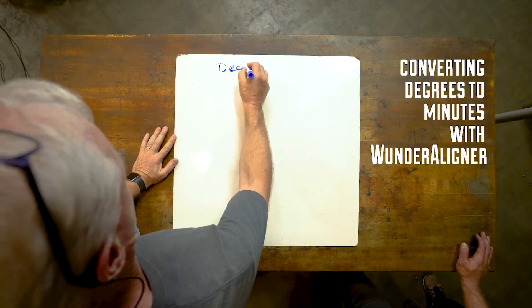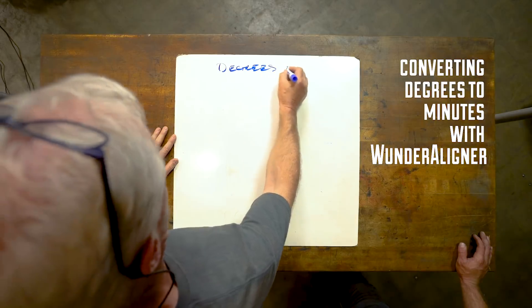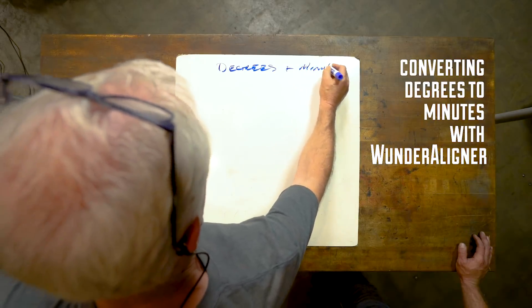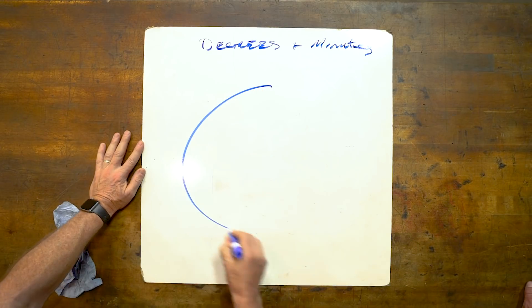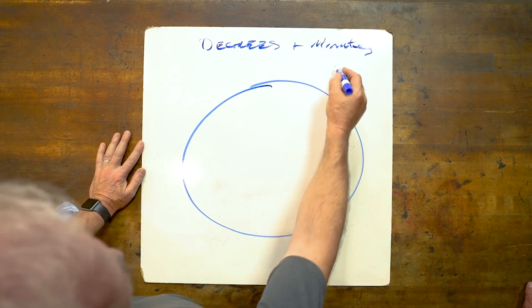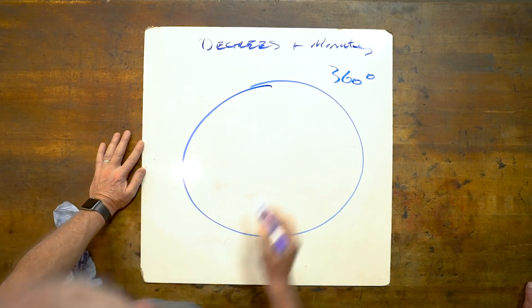Alright, so we're going to look at degrees and minutes. We all understand the concept of a circle, which is 360 degrees.